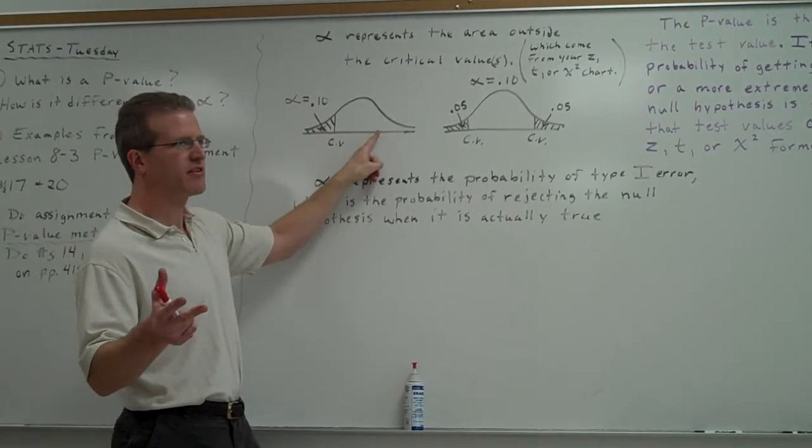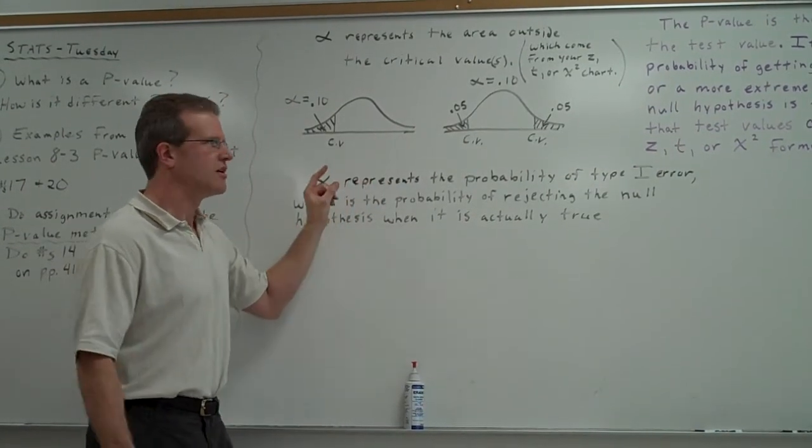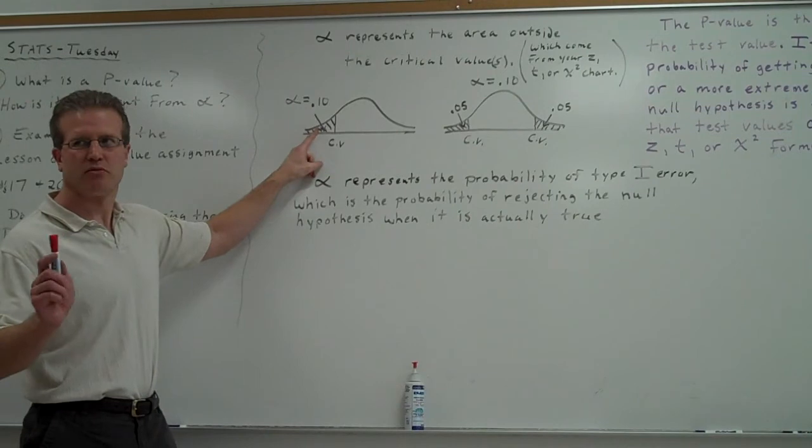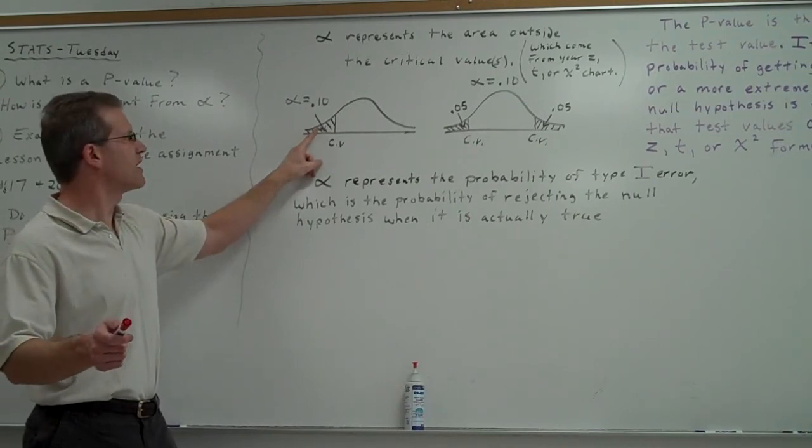If it was a right-tailed test, there'd be a critical value on the right. Alpha would be the area to the right of that critical value. The striped area is called the critical region, or the rejection region, and alpha is that area.